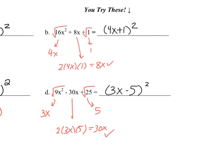For b: the outside square roots are 4x and 1. Check by doubling: 2 times 4x times 1 is 8x — that matches the middle term, so it is a PST. I put 4x and 1 in a bracket with addition and square it: (4x + 1)². For d: square root of 9x² is 3x, square root of 25 is 5. The middle term is subtraction, so the answer is (3x − 5)². The check worked.